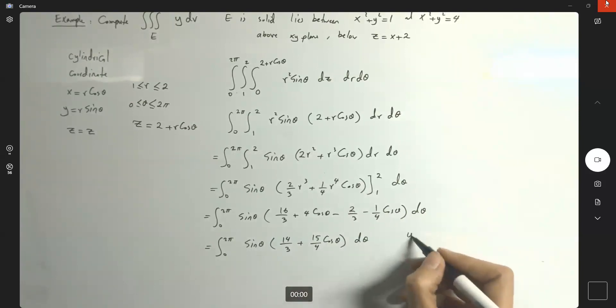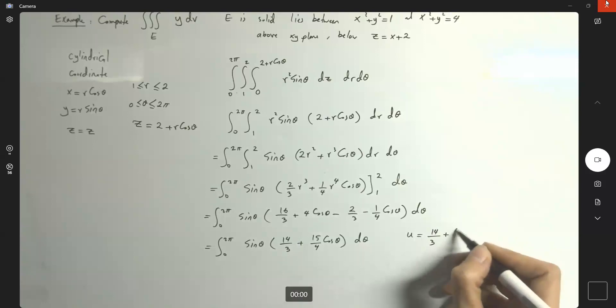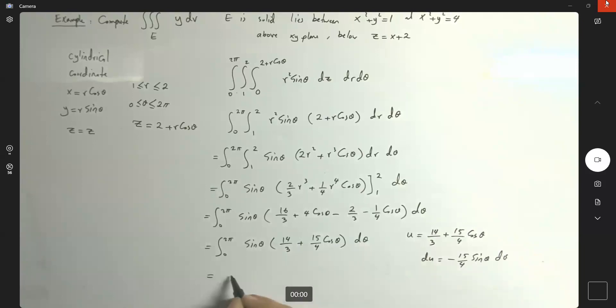So here you can use u sub. You can say that my u is equal to 14 over 3 plus 15 over 4 cosine theta. And du is negative 15 over 4 sine theta d theta. So this guy becomes negative 4 over 15.